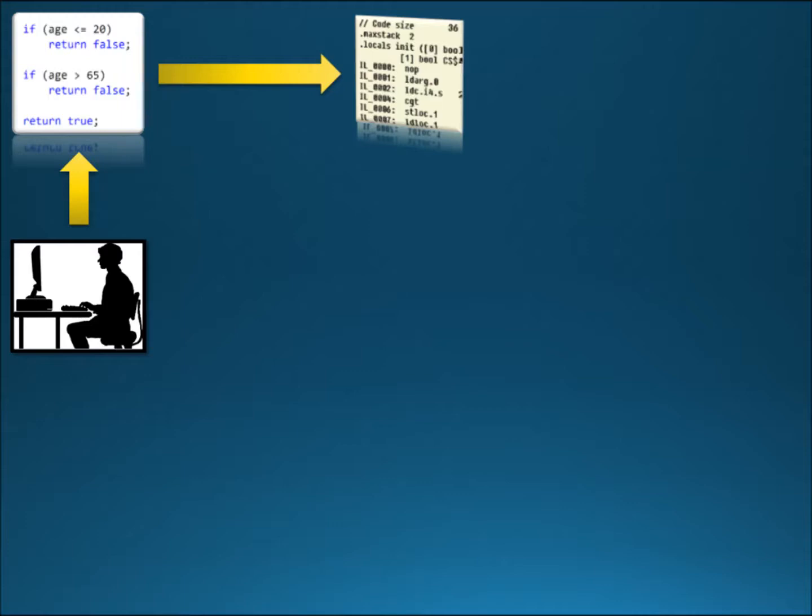Now is the first time the dynamic symbolic execution engine takes over. The engine statically analyzes the bytecode and dynamically executes the application to extract the mathematical constraints that have to be fulfilled by the method inputs to make the method execute given part of its code. On the slide we can see a sample of constraints extracted from the isWorkingAge method. For example, to reach the last statement, return true, the age input has to be greater than 20 and less or equal to 65.